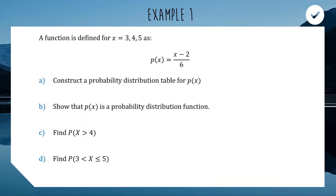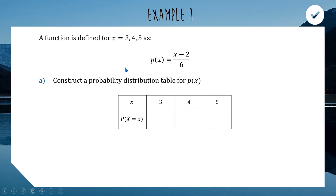Let's work through an example. We have a probability function P(x) defined for outcomes three, four, and five, where P(x) = (x minus 2) over 6. Substituting three: 3 minus 2 is 1, so P(3) = 1/6. Substituting four: 4 minus 2 is 2, so P(4) = 2/6 = 1/3. Substituting five: 5 minus 2 is 3, so P(5) = 3/6 = 1/2. We now have our probability distribution table.